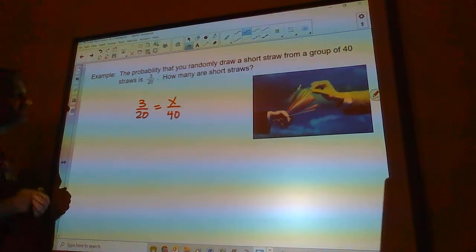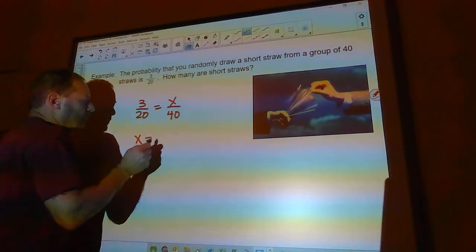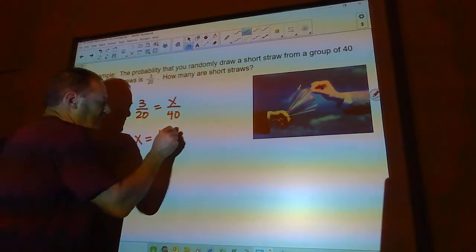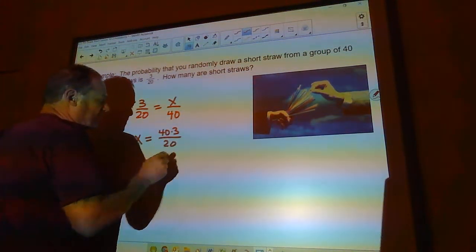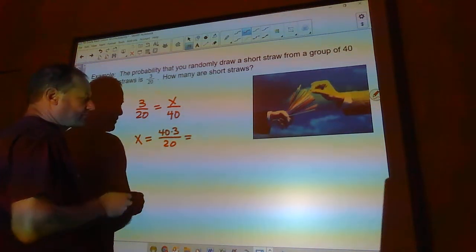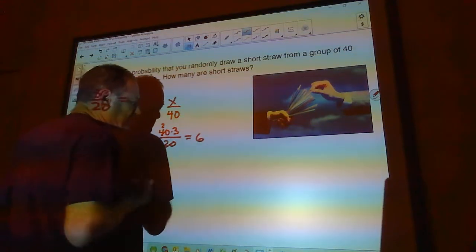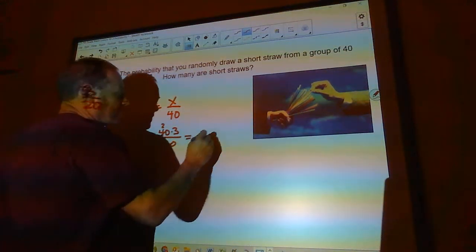When we solve a proportion, we multiply the two numbers diagonal and divide by the other one. So this would be 40 times three divided by 20, which is going to... 20 will go in here twice. Two times three is six. There's six short straws.